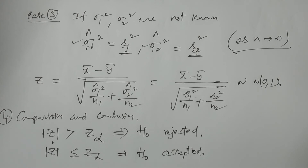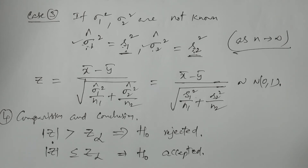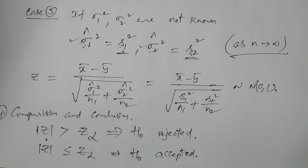This is the procedure for the test for two means in the case of large samples. The test is based on the normal distribution because the samples are treated as large samples. Thank you very much.